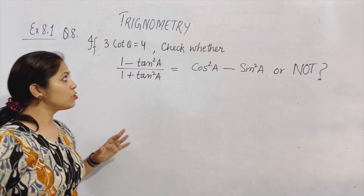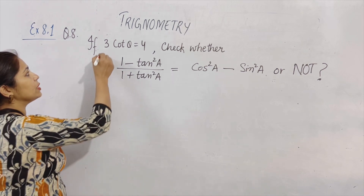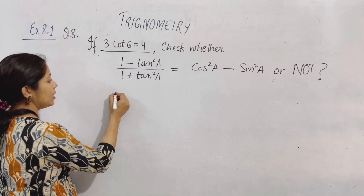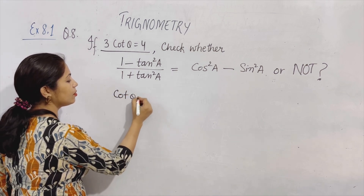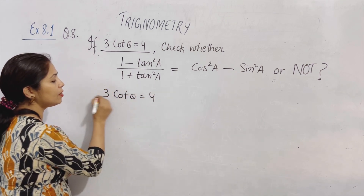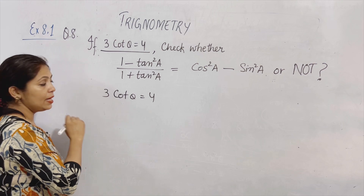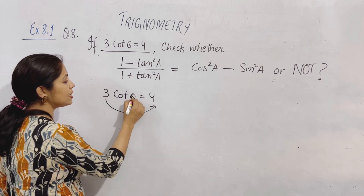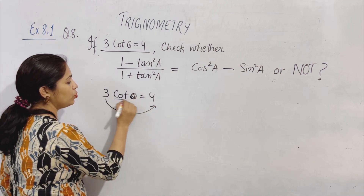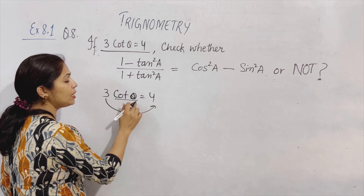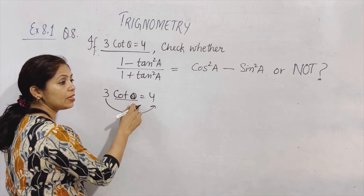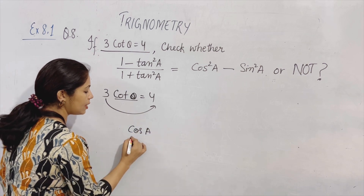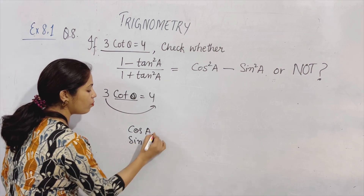In this kind of question, again, what is given? First, you need to focus here — what is given? Here, given: cot theta is equal to 4 and 3 written here. Can we bring this 3 here? Because cot theta is one term — you need to understand that cot theta, cot A, or whatever is written — cos A, sin A — this is a one term.